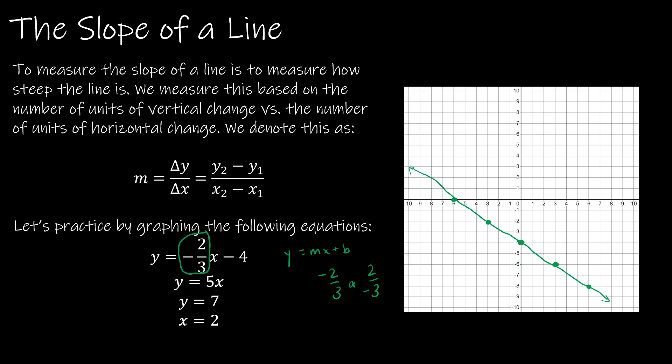The second one, y equals 5x. So notice there's no plus or minus anything, which means I'm starting right there in the center. The slope is five. And remember, we always think about slope as a fraction. So five over one. So that's up five over one, up five over one. I can think of this as negative five over negative one. So I can go down five and to the left one, and we can see that that's on the same line.